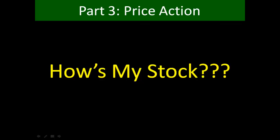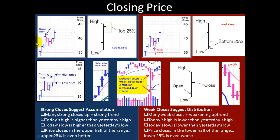Now let's look at price action specifically in part three of How's My Stock. First, let's go over some basics. When we say strong close, we mean any stock that closes in the upper 25% of the range. IBD considers a strong close anything in the top upper 50% of the range, but I found in my experience that I like to see it close in the upper 25% — that gives me more confidence that the move is legit.